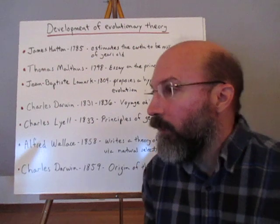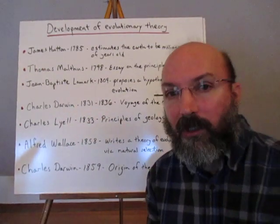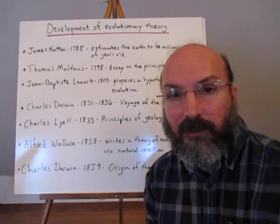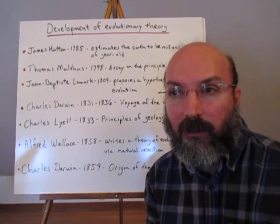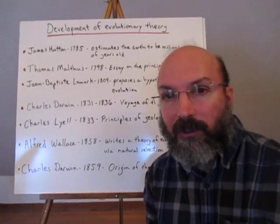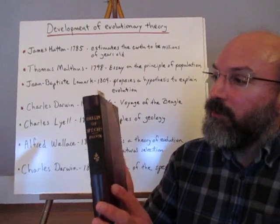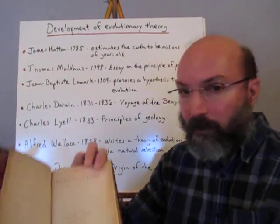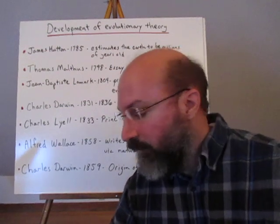Alfred Wallace was working in Malaysia and noticing some of the same things Darwin had been working on since returning from the Beagle. Wallace sent Darwin an essay outlining how the struggle for existence caused new species to appear. This was so similar to Darwin's work that Darwin decided to publish his most famous work, the Origin of Species, in 1859. It's still read today and remains the basis for our understanding of Darwinian evolution.